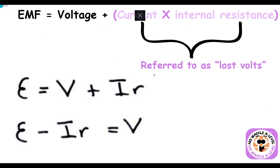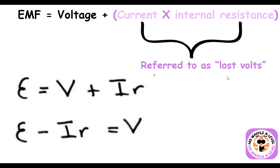From this we get the equation: EMF = V + lost volts, where the lost volts are the voltage lost due to internal resistance. Since V = IR, the lost volts equal the circuit current multiplied by the internal resistance — i.e., lost volts = Ir. In a series circuit, the current is the same everywhere.